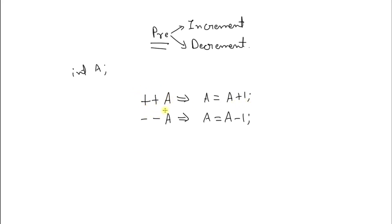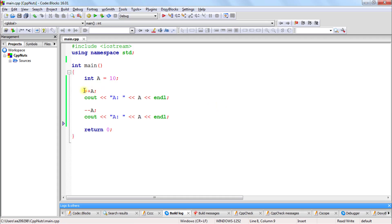And if you want to decrement your variable by 1, instead of writing a equals a minus 1, you can simply write minus-minus-a. So plus-plus-a is just a shorthand for a equals a plus 1, and minus-minus-a is a shorthand for a equals a minus 1. Let us take a look at the code. I have a code where a is equal to 10 and we are pre-incrementing it, which is nothing but a equals a plus 1.